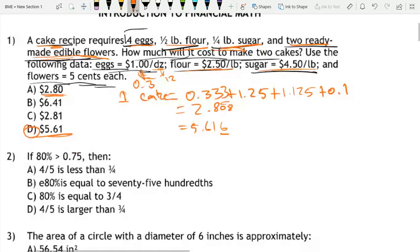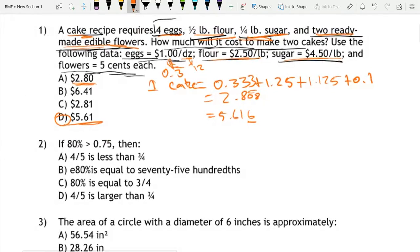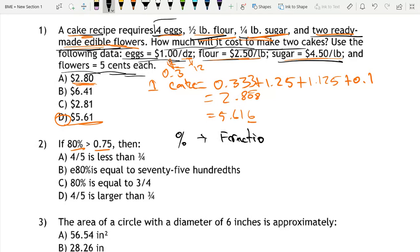Now we'll go on to our next problem. If 80% is greater than 0.75, then. What this problem is asking us is to convert a percent to a fraction. So 80% as a fraction is 4 fifths, right? Because 80% is 80 over 100.